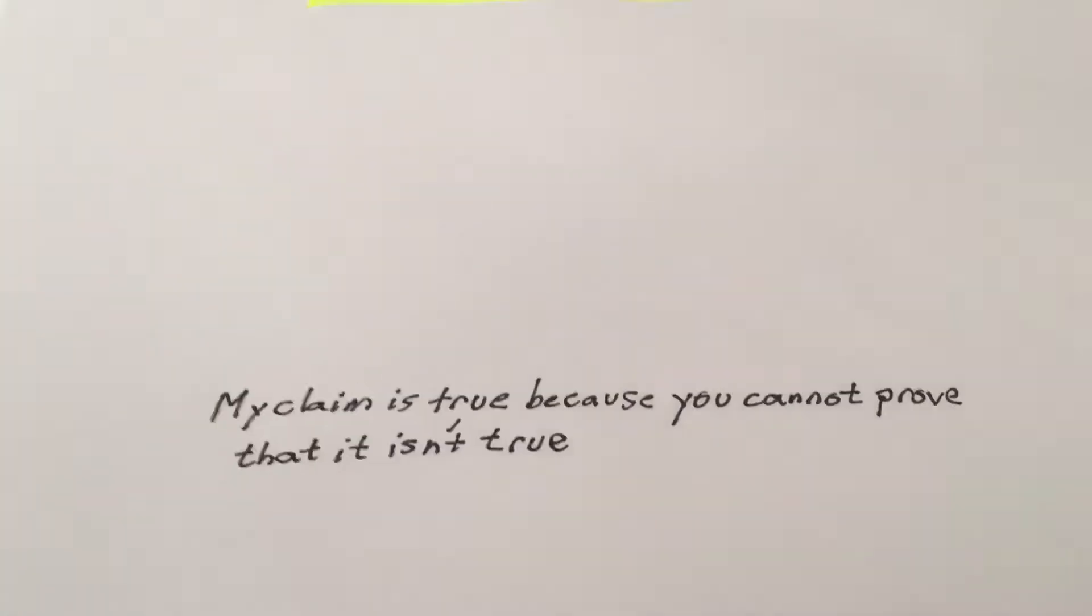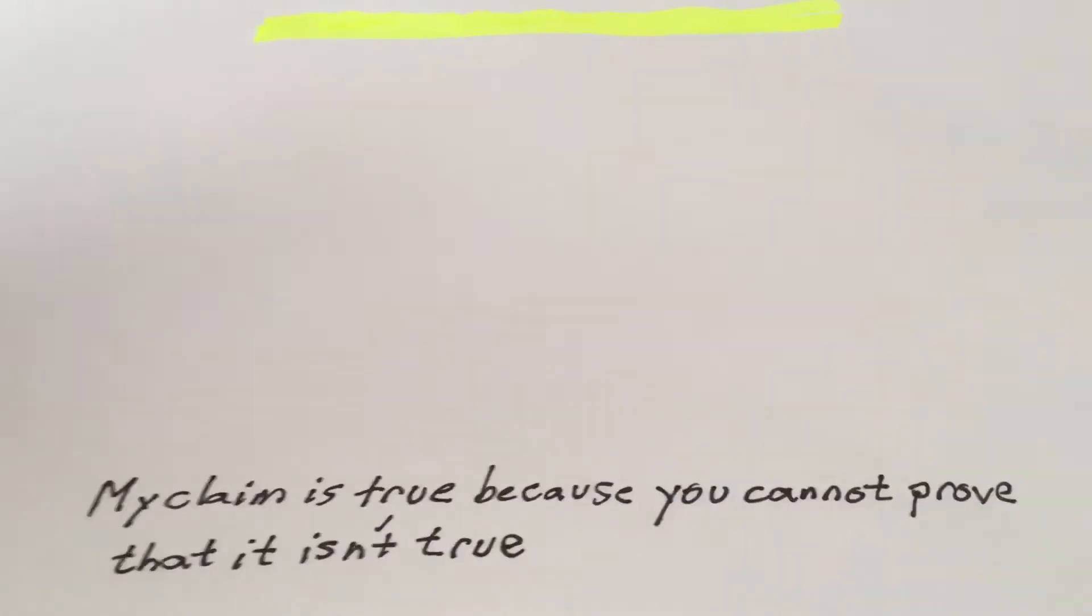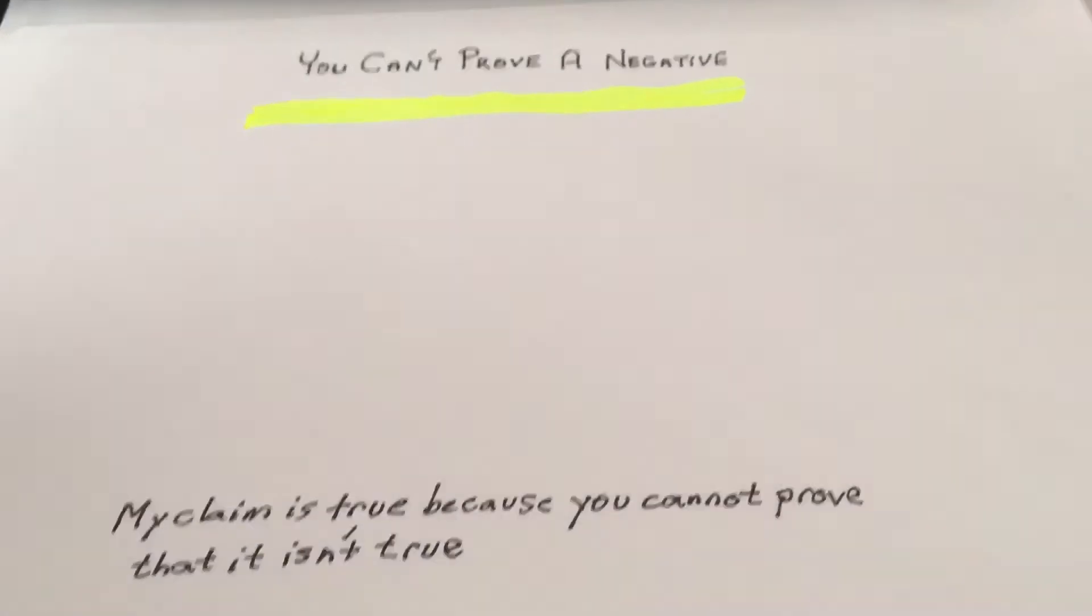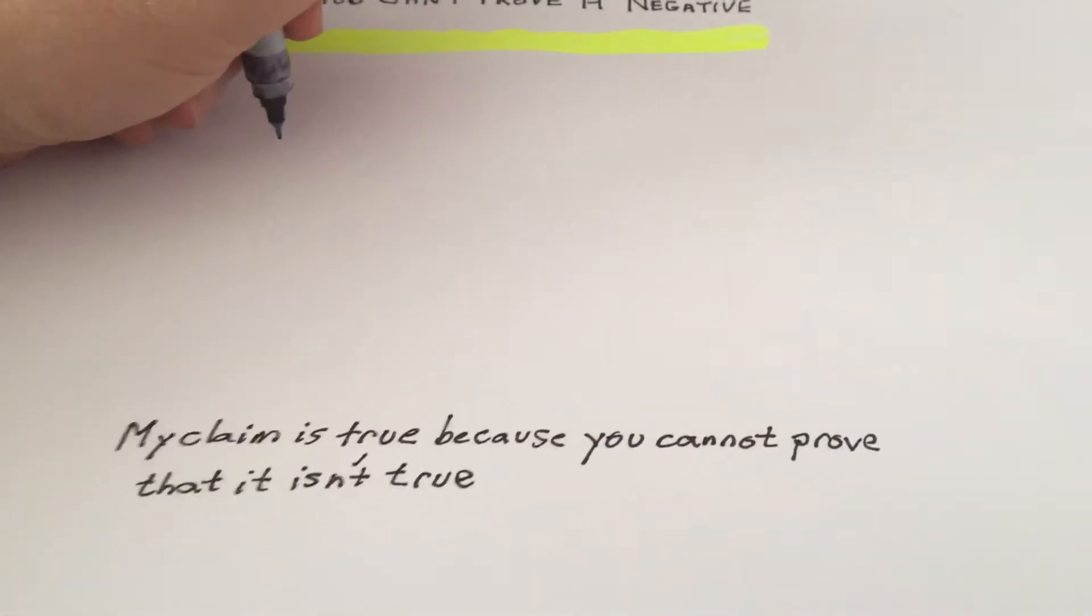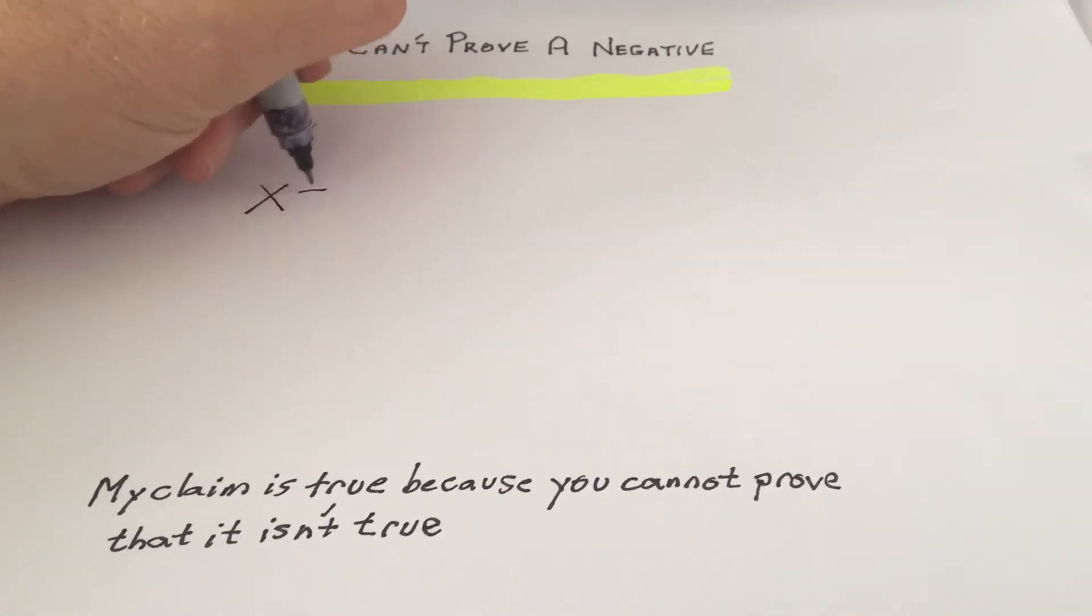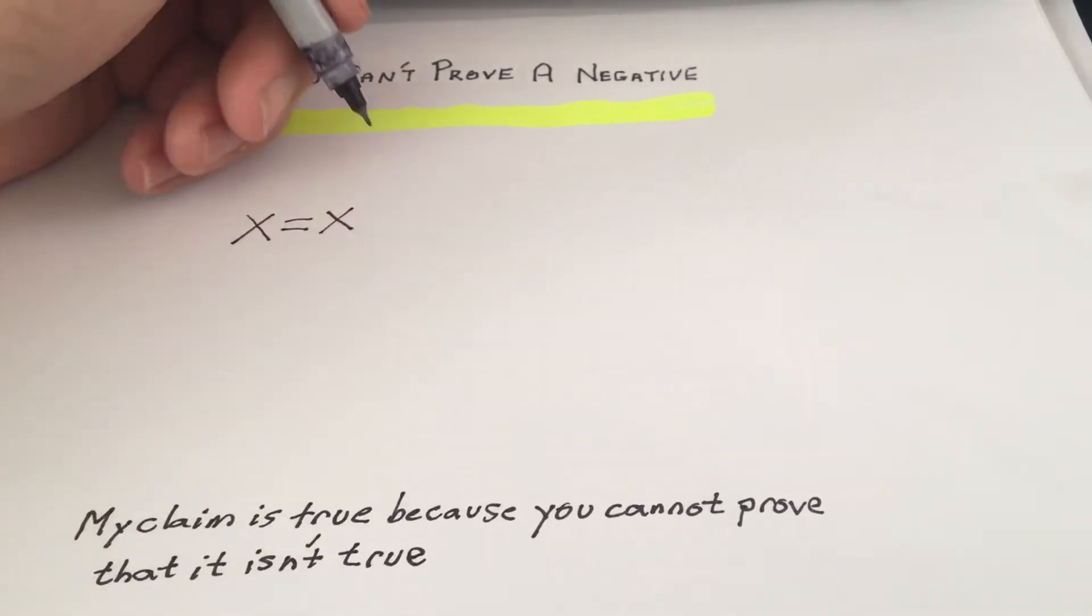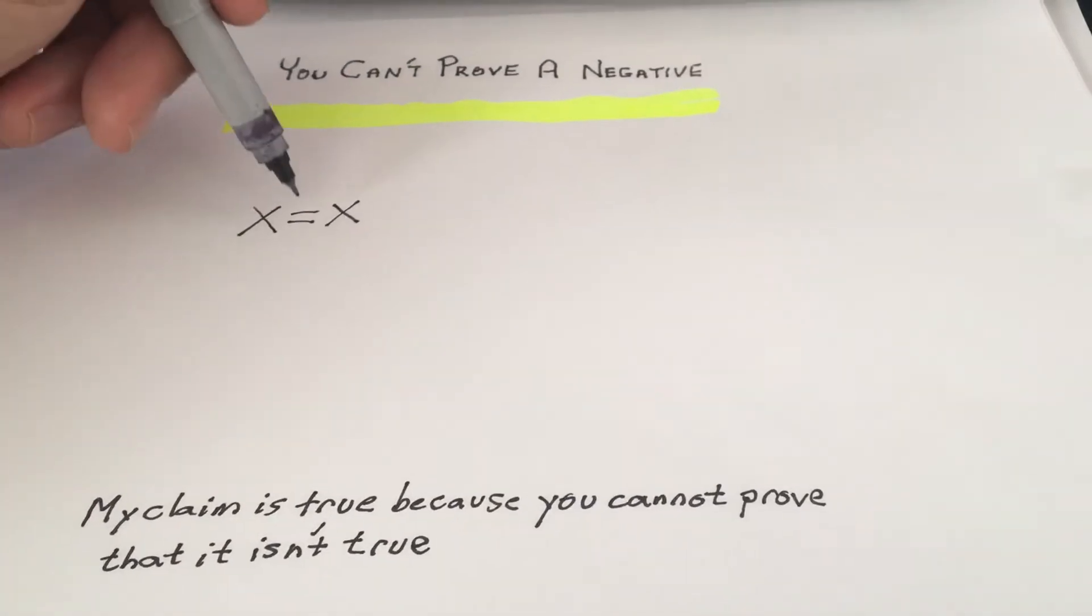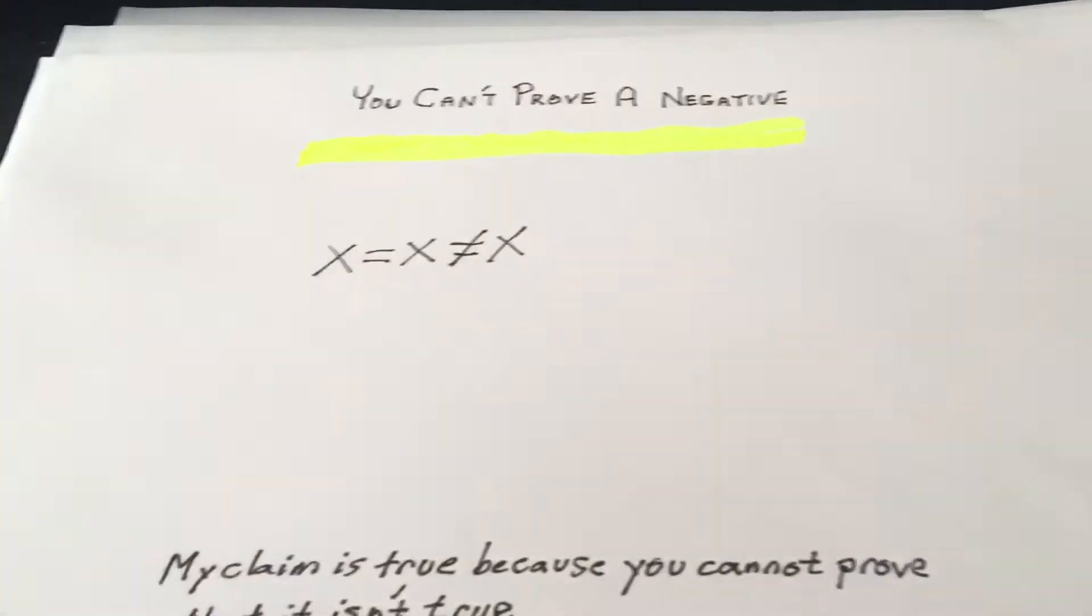So after trying to think long and hard, this is the equation I came up with after trying to derive it several times. And it's actually really astonishingly simple. So the premise here is that we have a claim, any claim, so we have x. My premise x is equal to my premise, it's true. My premise is true because you cannot prove my premise is not true.